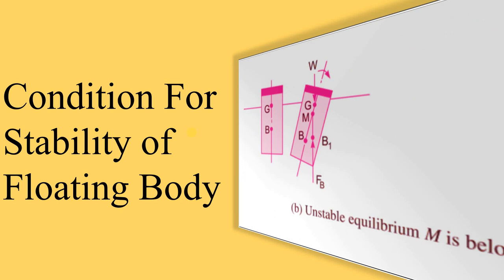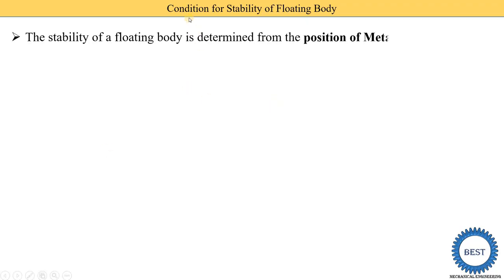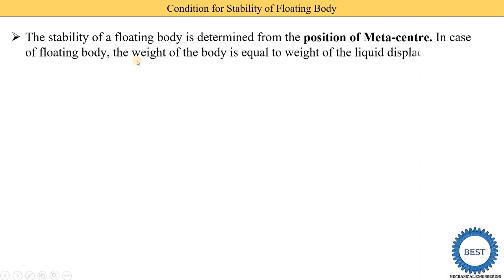In the last video, we discussed the condition for stability of a submerged body, where we focused on the G point and the center of buoyancy B. For a floating body, instead of the center of buoyancy, we focus on the metacenter. The stability of a floating body is determined from the position of the metacenter M relative to the center of gravity G.